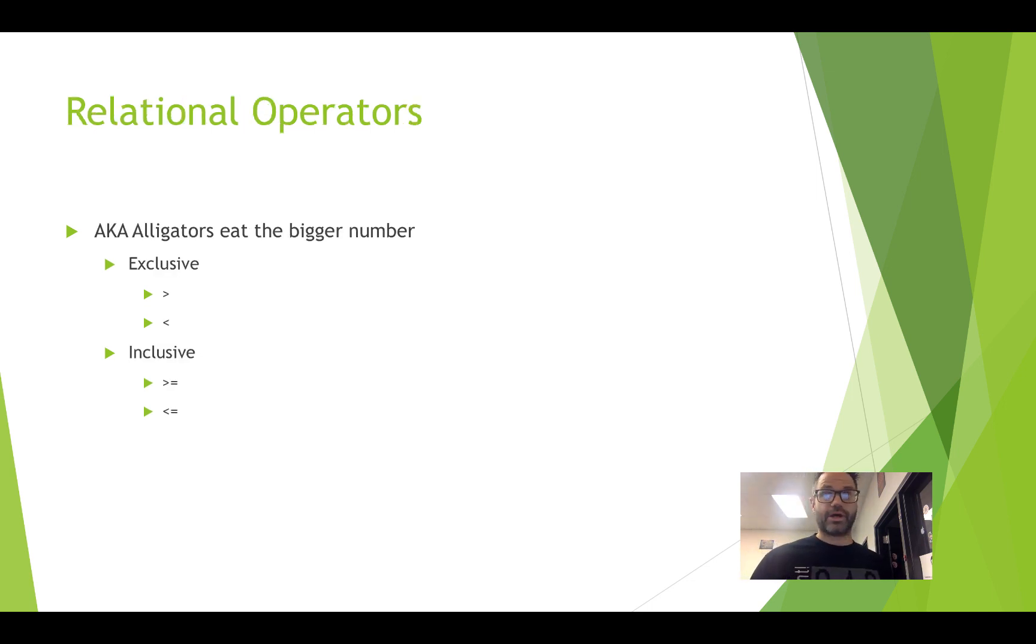The relational operators, a.k.a. the alligators eat the bigger number. Now, remember we have the exclusive values of greater than or less than, but we also have the inclusive. When we're working with the inclusive values, we have the greater than symbol or the less than symbol first, and then the equal sign. It's not equals greater. It's greater than or equals. So make sure you write that down when you're actually doing your handwriting code, and type in as well. Otherwise, your compiler is just going to go, and it's going to be really confused, and we don't need to add confusion to the computer because it's not as smart as you are already.